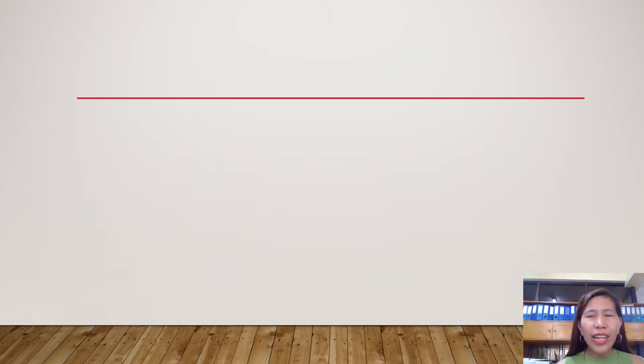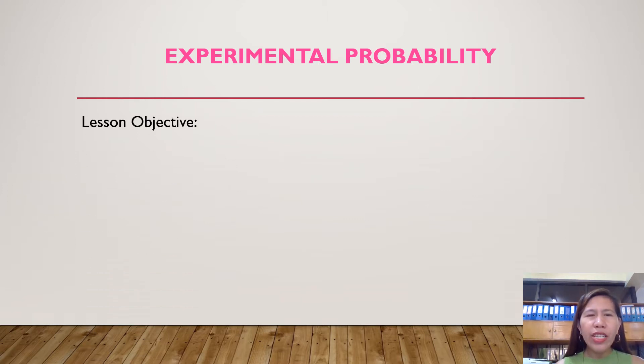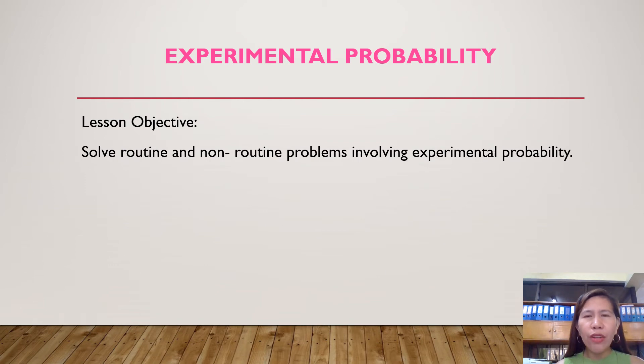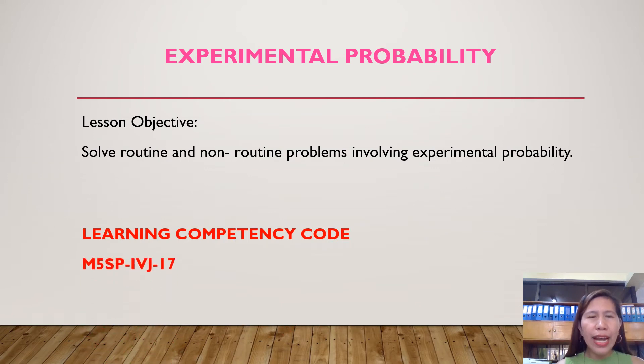Our lesson for today is all about experimental probability. Our lesson objective is solve routine and non-routine problems involving experimental probability. Learning competency code mathematics 5, simple probability dash 4, J dash 17.